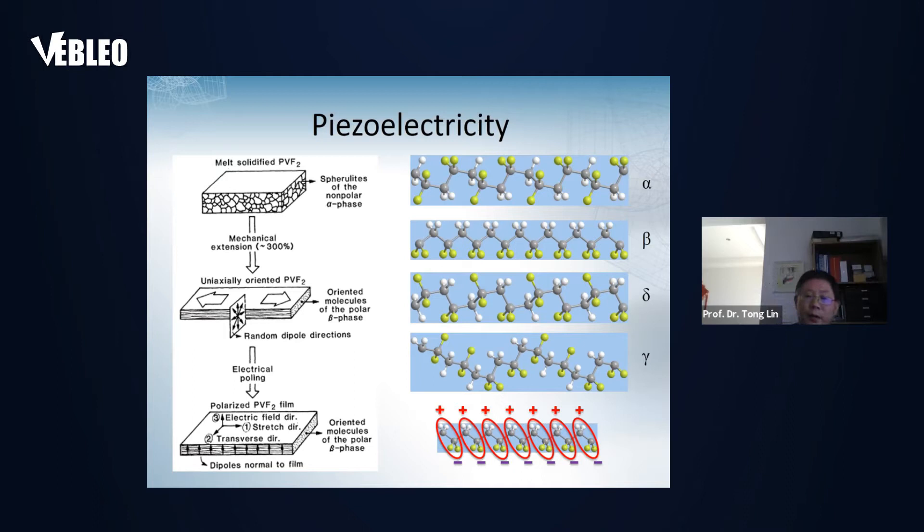The reason for this is because PVDF has quite a few molecular conformations. In the solid state, people like to call them crystal phases. Different molecular conformations correspond to the name of the crystal phases. The series of treatment is because the raw material only contains alpha phase, which has no piezoelectricity. The piezoelectric properties come from the beta phase conformation.